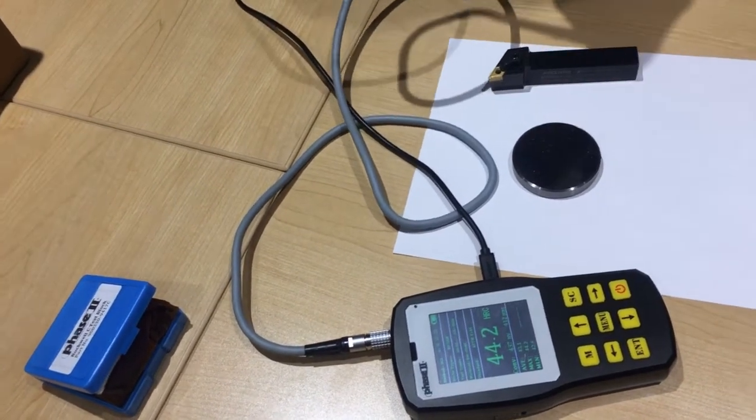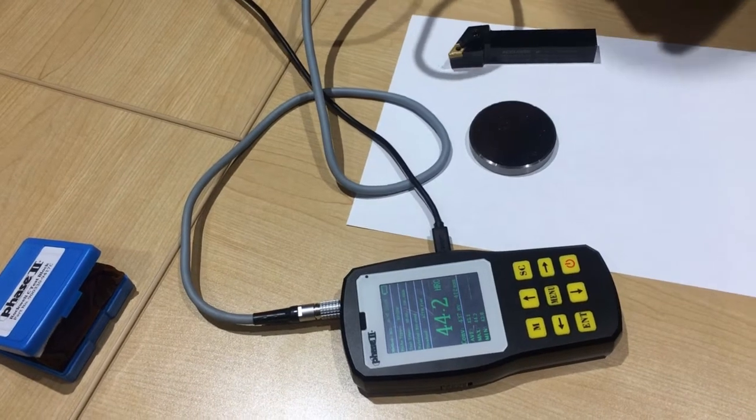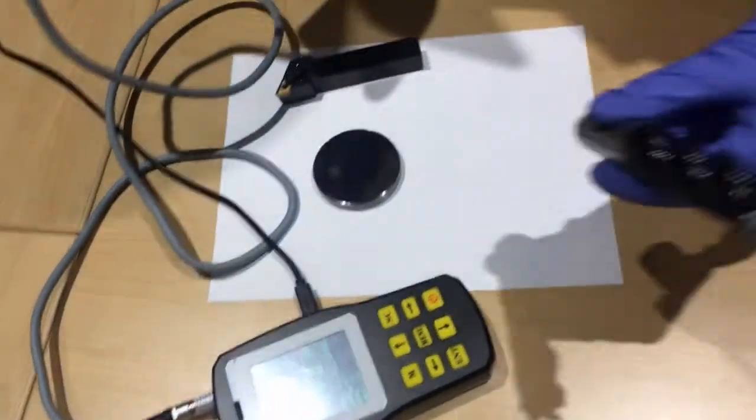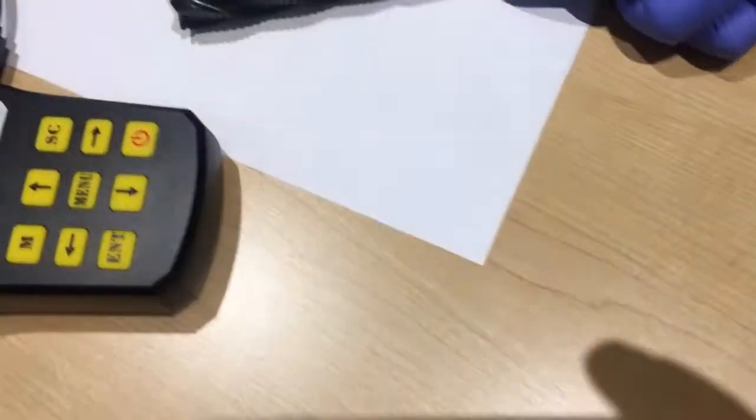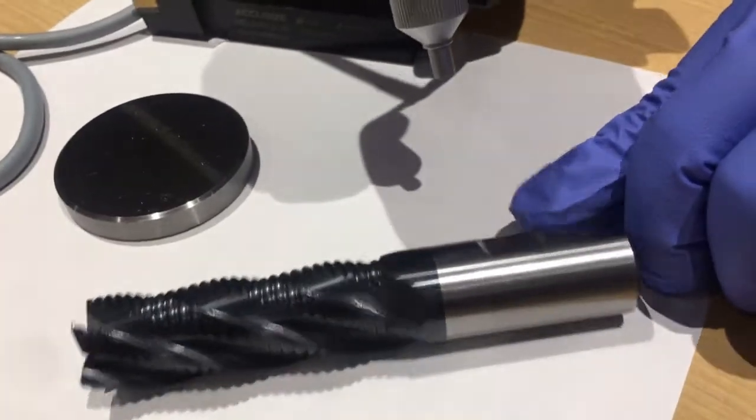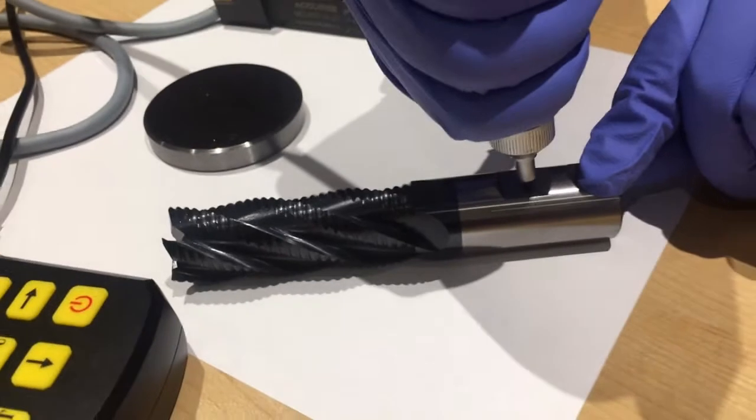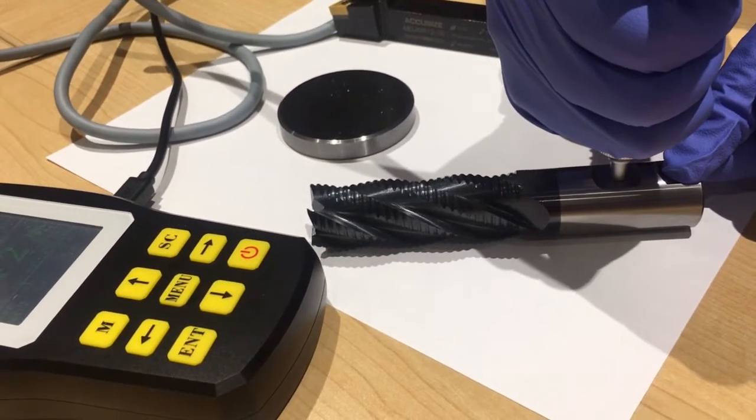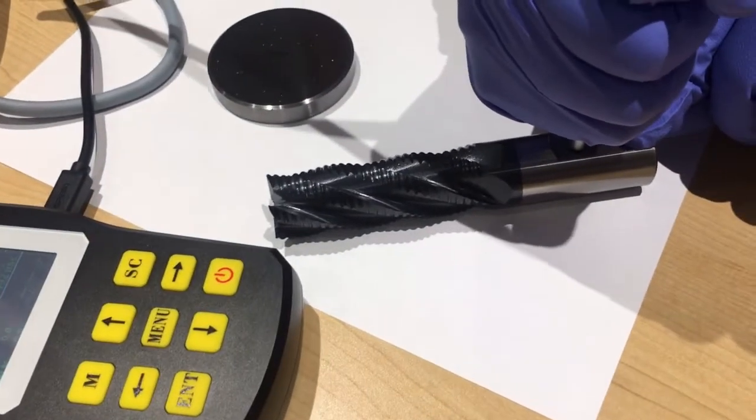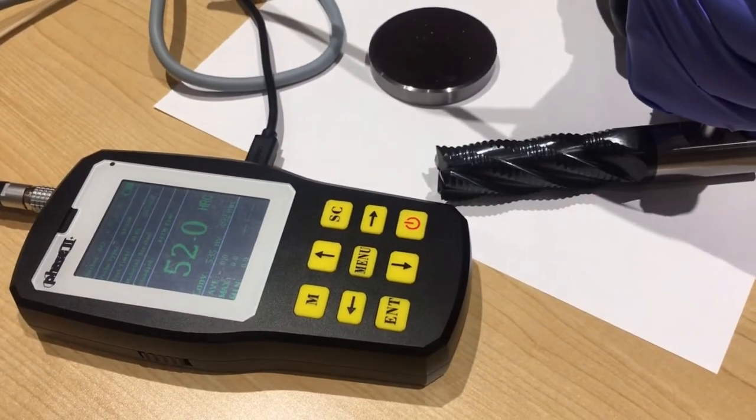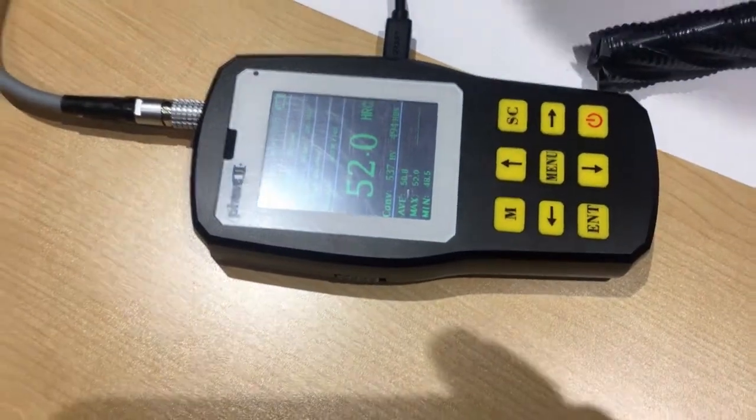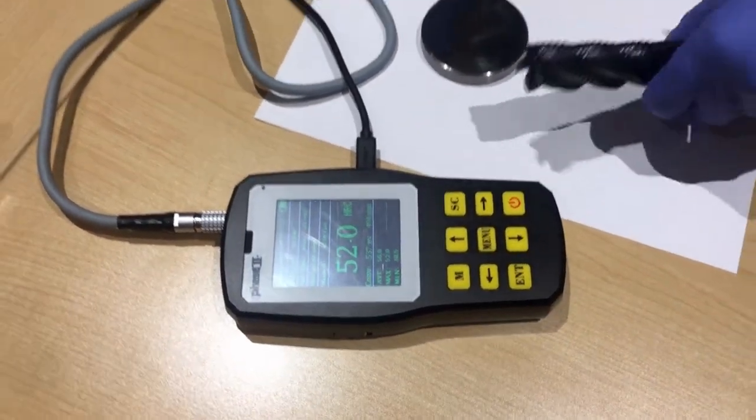We're going to change to another thing, that is our cobalt rough end mill. We're going to test the shank here. So here is the product. Because it's a round thing, we're going to find some flat surface here. That's first reading. Second one comes out. Now we got the average here, it's almost 51 HRC. So that's pretty much how it uses.